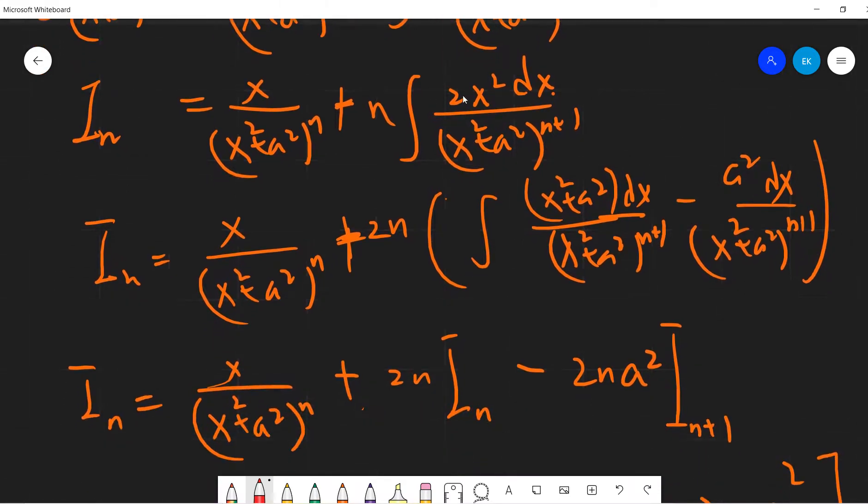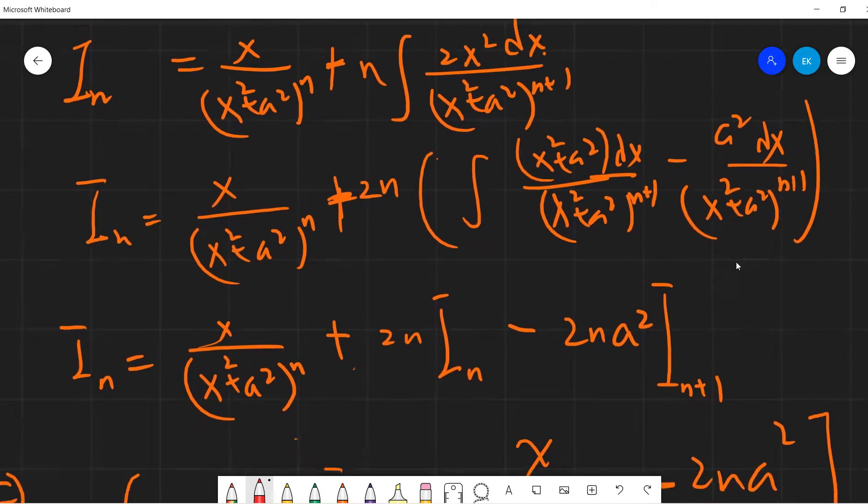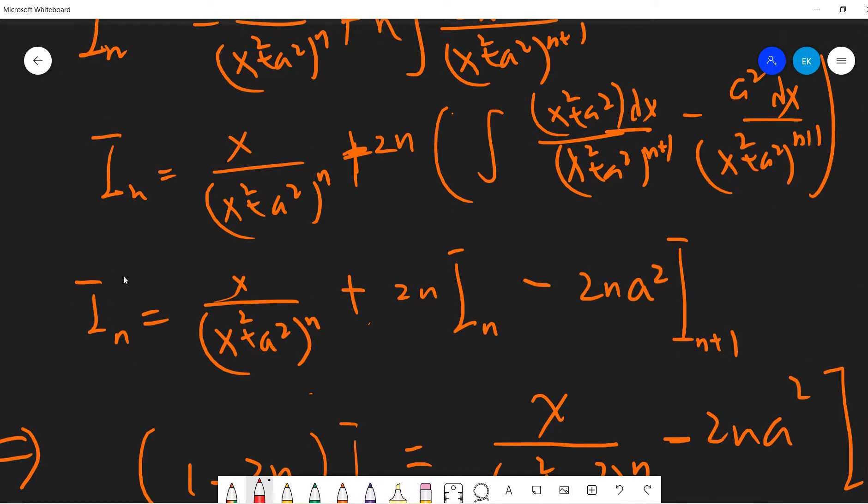Then it's very easy, we just pull out these two, we get 2n, and we write this x squared as x squared plus a squared minus a squared, two terms. Okay, so the left side is I_n, this is this one, and then this one is what? It's I_n, right? And then this one is a squared minus 2n a squared I_n plus 1.